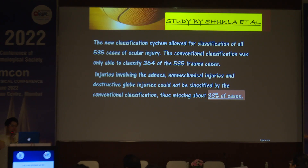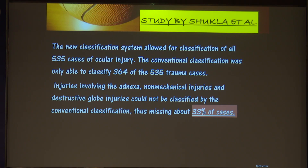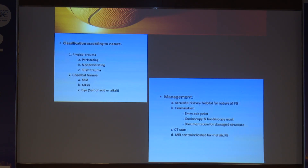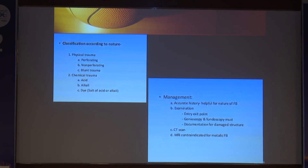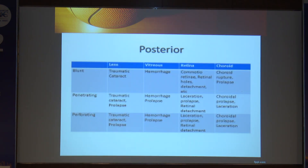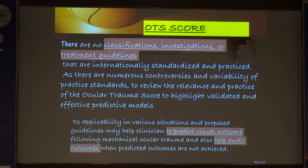With the new classification, all cases can be classified. Management requires accurate history, examination, identifying entry and exit points, gonioscopy, fundoscopy, documentation of damaged structures, and CT scan or MRI — with MRI contraindicated if there is a metallic foreign body. Blunt trauma can affect any part of the eye including the lens, vitreous, retina, or choroid, as can penetrating and perforating injuries.